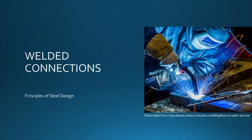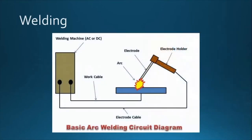Welded Connections. Let us define the word welding. Welding is a process of connecting pieces of steel together by molten metal produced by the application of intense heat.